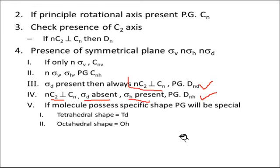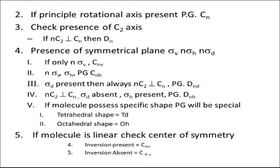In certain molecules, the point group is determined based on the shape. If the shape is tetrahedral, their point group will be Td. If it is octahedral, then it has an Oh point group. If the molecule is linear, then the point group will be C∞V.